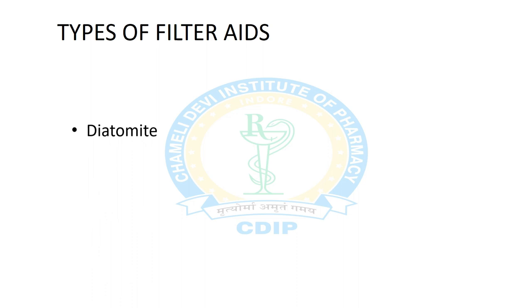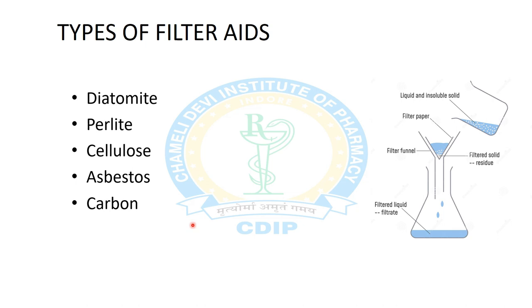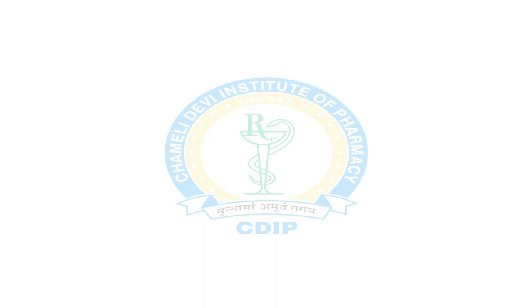Now the various types of filter aids: diatomite, perlite, cellulose, asbestos, and carbon. These are the filter aids used in filtration.